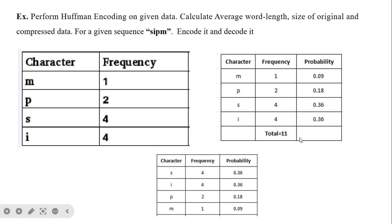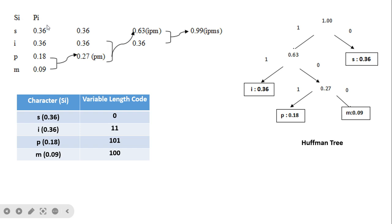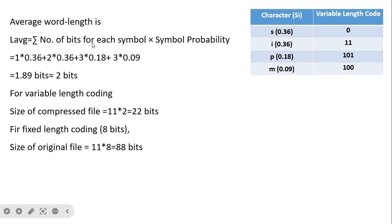A third example: total characters are 11. We calculate probabilities and arrange in descending order, then build the Huffman tree similarly to the previous two problems. Leaf nodes are marked with square brackets. Average word length = 0.36×1 + 0.36×2 + 0.18×3 + 0.09×3 = 2 bits per character. Compressed file size: 11 × 2 = 22 bits. Without compression: 11 × 8 = 88 bits.